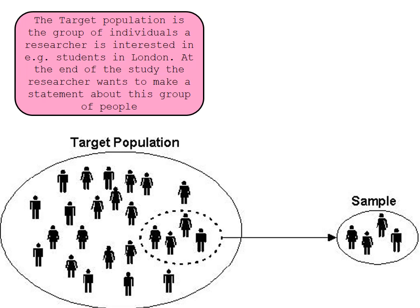It's near impossible to do an experiment on all of the target population. So it's important that the researcher takes a smaller sample that is representative of the whole target population. That way, after they've run their results, they can make generalisations about the whole target population just from the experiments run on the selected sample.